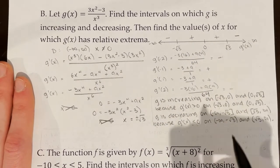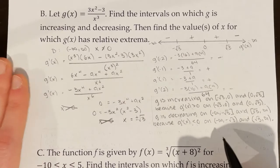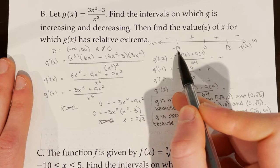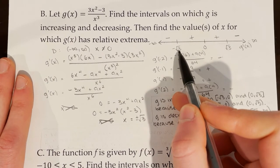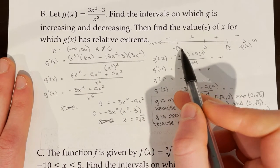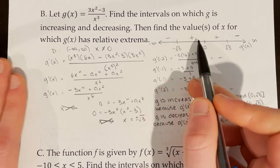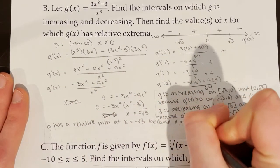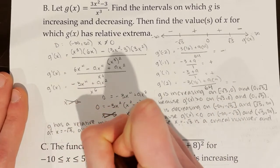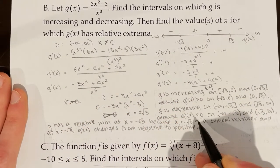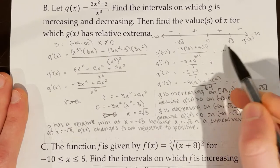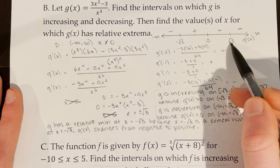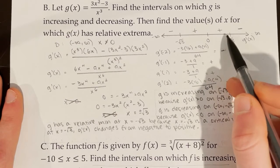To find relative extrema: g has a relative minimum at x equals negative rad 3 because x equals negative rad 3 is a critical number and g prime of x changes from negative to positive there. g has a relative maximum at x equals rad 3 because x equals rad 3 is a critical number and g prime of x changes from positive to negative at x equals rad 3.